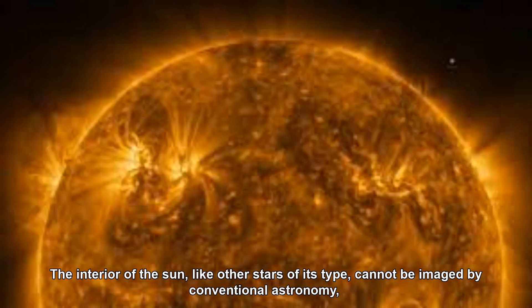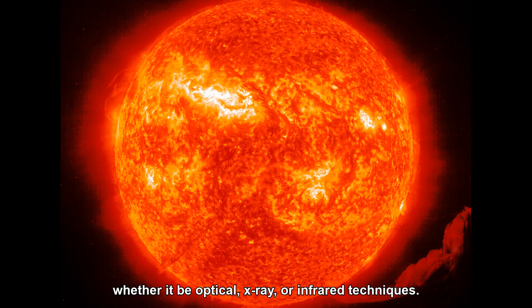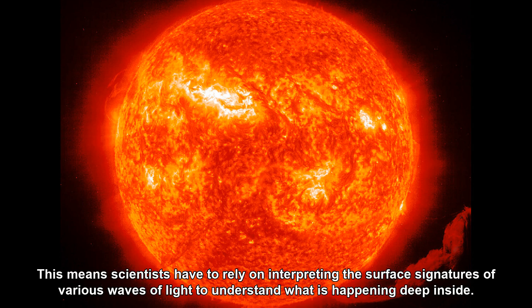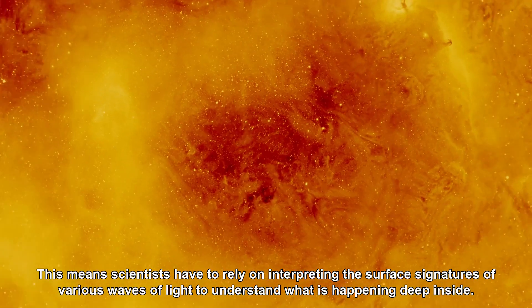The interior of the sun, like other stars of its type, cannot be imaged by conventional astronomy, whether it be optical, x-ray, or infrared techniques. This means scientists have to rely on interpreting the surface signatures of various waves of light to understand what is happening deep inside.